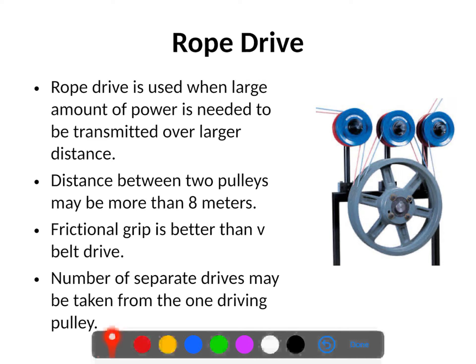Apart from transmitting power over longer distances, rope drives also have an advantage in transmitting higher power. Although V-belts have a high transmission capacity, rope drives have an even greater capacity because the frictional grip is better than in V-belt drives. Additionally, one advantage of rope drives is that a number of separate drives may be taken from one driving pulley, allowing various applications to be run from a single driving pulley.